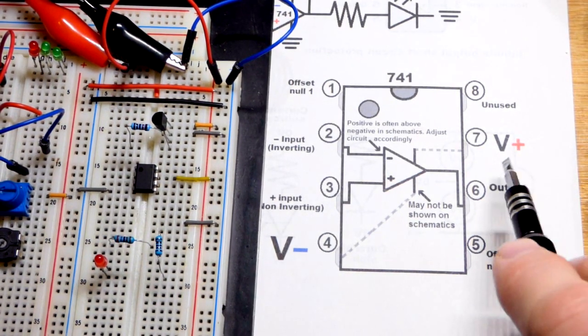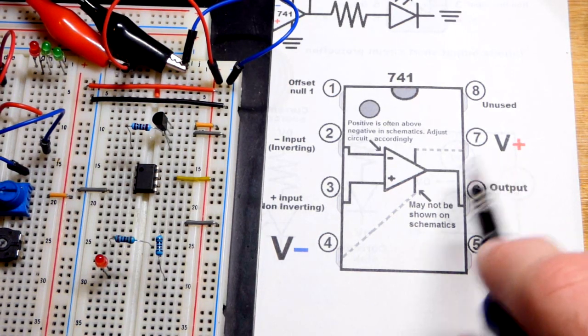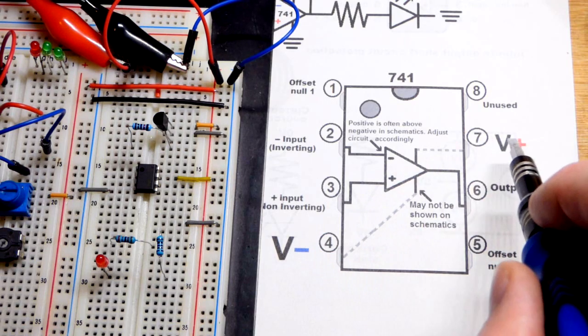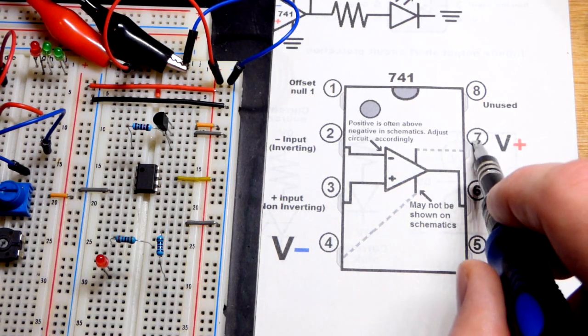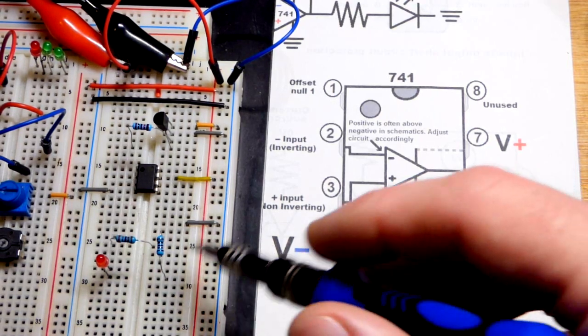As I said before, this is an old sheet. I got into a habit of putting the plus after the V. It should be in front of the V, but not end of the world. This is the positive side of the power supply, pin number seven. You can see I already got that plugged in there. Negative side of the power supply, pin number four.